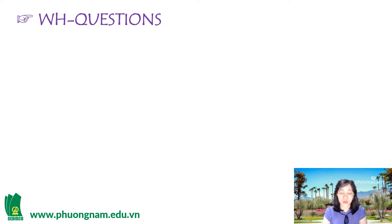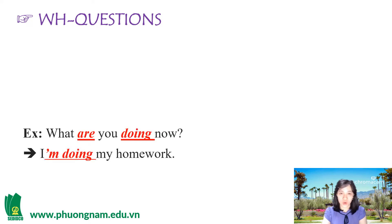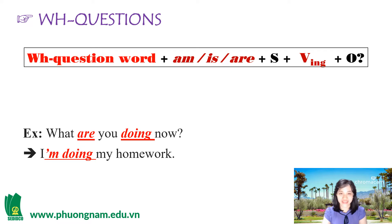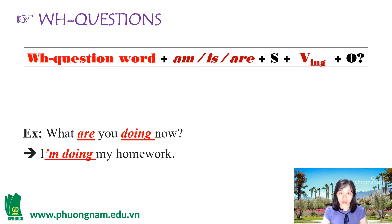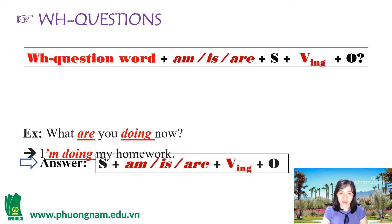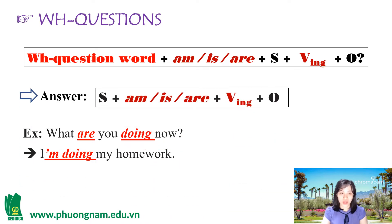Tiếp theo, WH questions — câu hỏi có từ để hỏi. Ví dụ: What are you doing now? I'm doing my homework. Công thức: WH question word + am/is/are + subject + verb-ing + object. Câu trả lời: Subject + am/is/are + verb-ing + object.